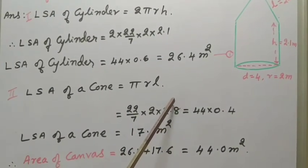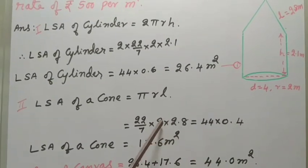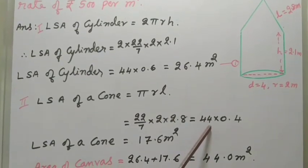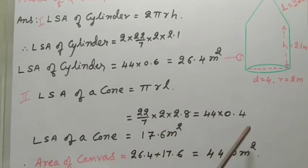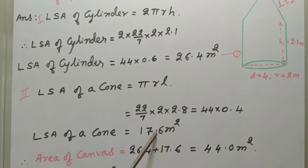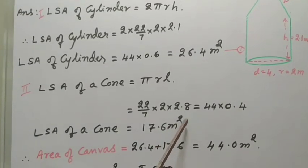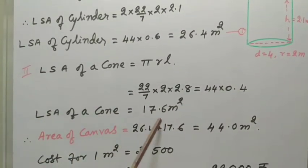It is divisible by 7. 7 into 4, that means we have to put the decimal point up. So, 0.4, 2 into 22, 44. Multiply these two, 4 into 4, 16. One carry number, 4 into 4, 16 plus 1. Put the decimal point up to one place. 17.6 meters square, that is lateral surface area of cone.